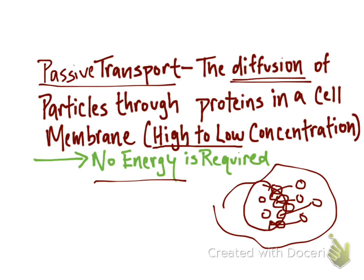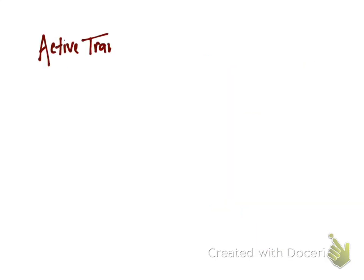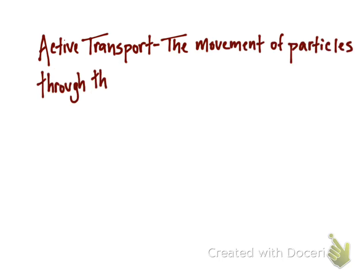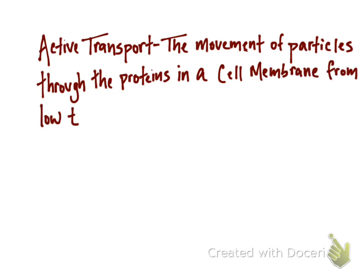So next, let's go ahead and discuss the basic dictionary definition of active transport. And that is the movement of particles through proteins in the cell membrane against the direction of diffusion or in other words,